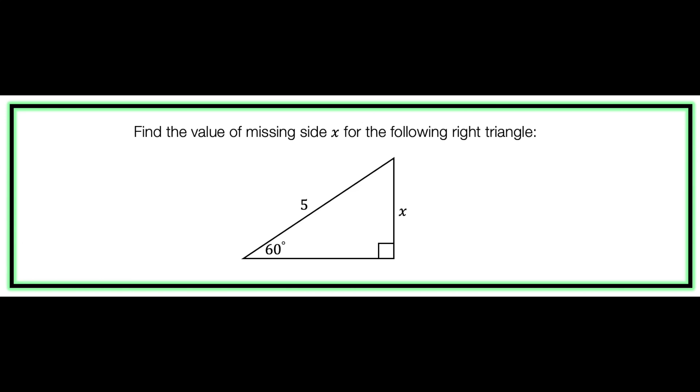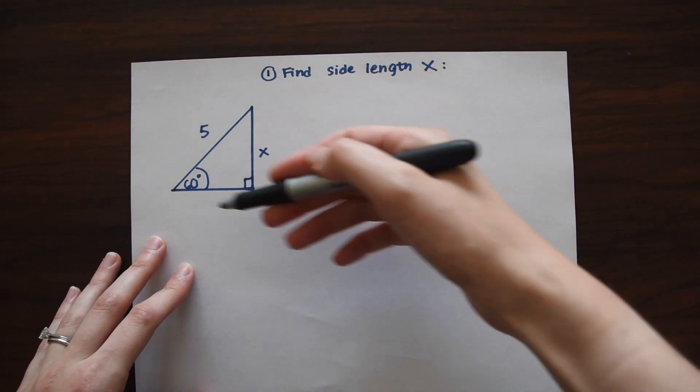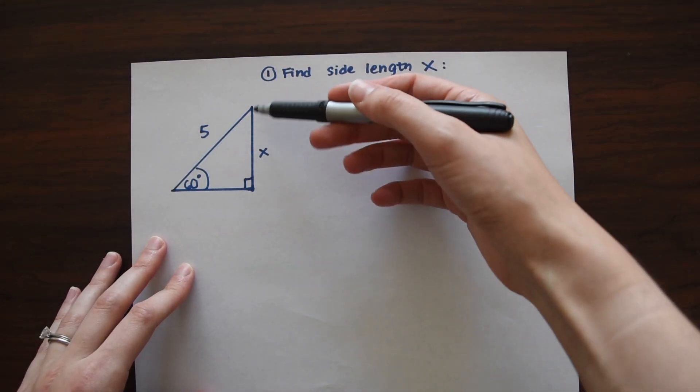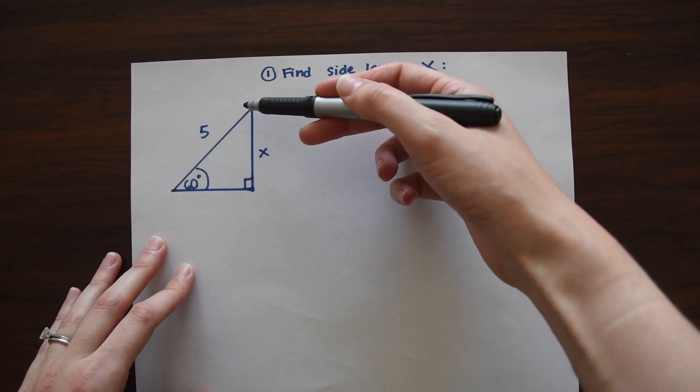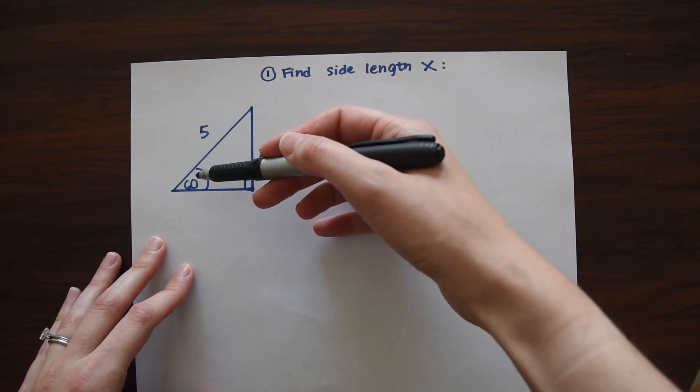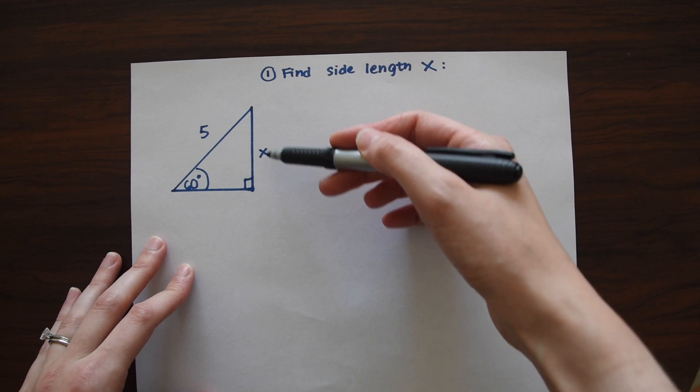We have something that wants us to find the side length of X. So we have this triangle here, and we are given one side X, one side 5, and then an angle of 60 degrees. And they want us to find this missing side X.